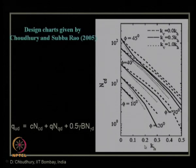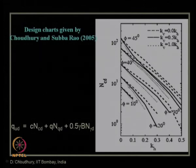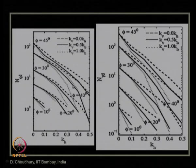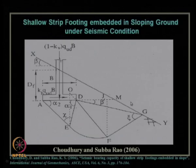As seismicity increases — that is, as KH and KV values increase — there is a significant decrease in bearing capacity, which must be considered for design of any shallow footing in a seismically active region. Design charts for NQD and NγD are also provided.